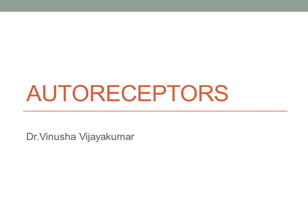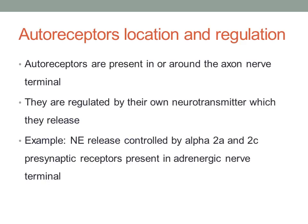Hi everybody, today we will see about autoreceptors — their location and regulation. Autoreceptors are present in or around the axon nerve terminal, so they are regulated by their own neurotransmitter which they release. For example, norepinephrine release is controlled by the same norepinephrine released from the axon nerve terminals, which acts on the alpha-2A and 2C receptors present in the presynapse.